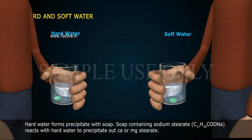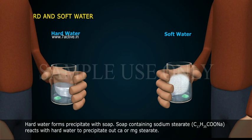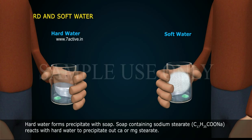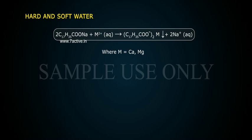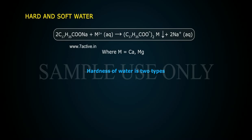Hard water forms a precipitate with soap. Soap containing sodium stearate (C17H35COONa) reacts with hard water to precipitate out calcium or magnesium stearate: 2C17H35COONa + M²⁺ → (C17H35COO)₂M + 2Na⁺, where M is calcium or magnesium. Hardness of water is of two types: 1. Temporary hardness, 2. Permanent hardness.